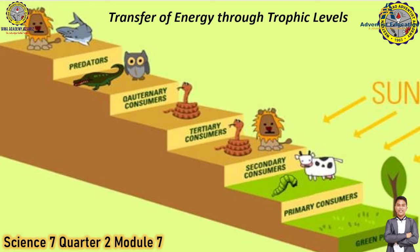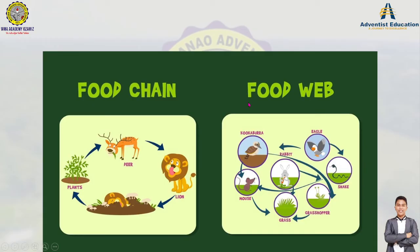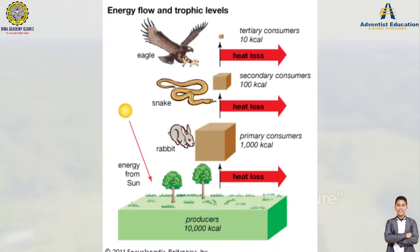We are now in the last part of your module, so I hope you will see page four of your module so you can follow this discussion about the transfer of energy through trophic levels. Please check the description below for the links to Part 1 and Part 2 of this pre-recorded discussion. Now let's proceed to our discussion about the food chain and the food web, which is the main concept of energy transfer in trophic levels.